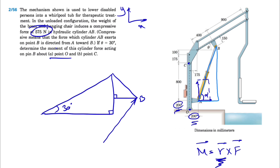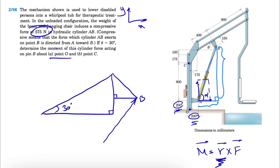Look at this right triangle highlighted in light blue. If we figure out this side and this side, we can do a simple tangent of alpha — opposite over adjacent — and we're good to go. To find these sides, let's look at this part in a bigger scale. The horizontal distance is 800 plus 175 plus 100 plus a small additional distance that we need to calculate.